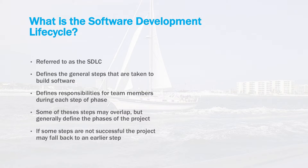Each step defines a phase of the software development project. During each phase, team members will have different responsibilities that help drive software towards final production. Some of these steps may overlap, but they generally define where the project is in respect to developing the final product. If there's difficulty in some steps, then the project may fall back to a previous step to fix the problem.